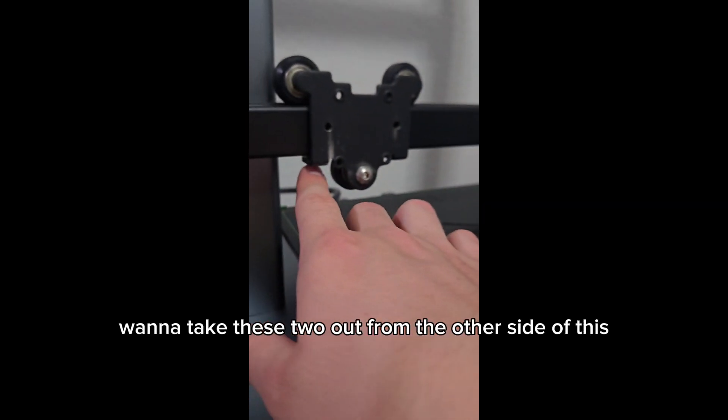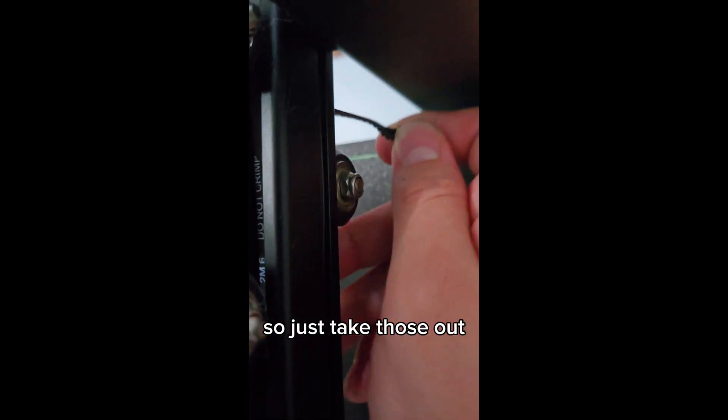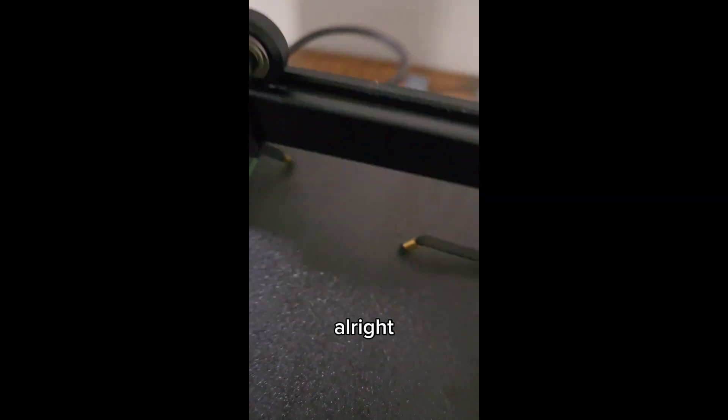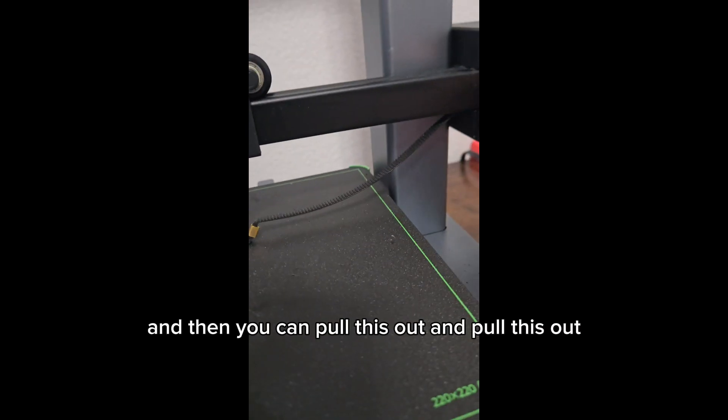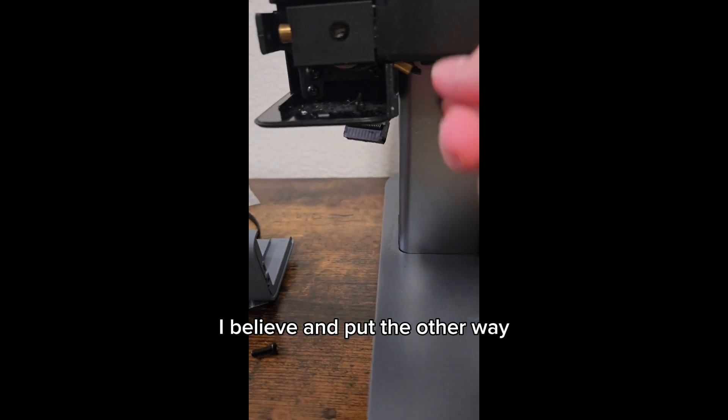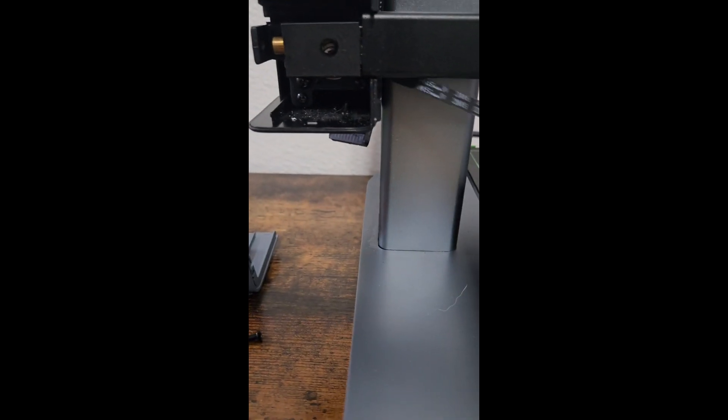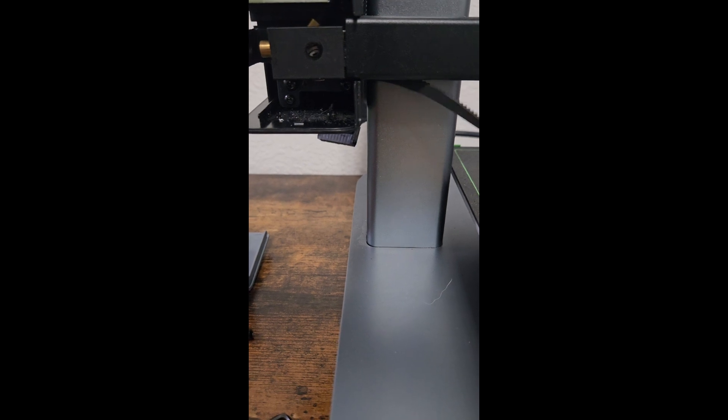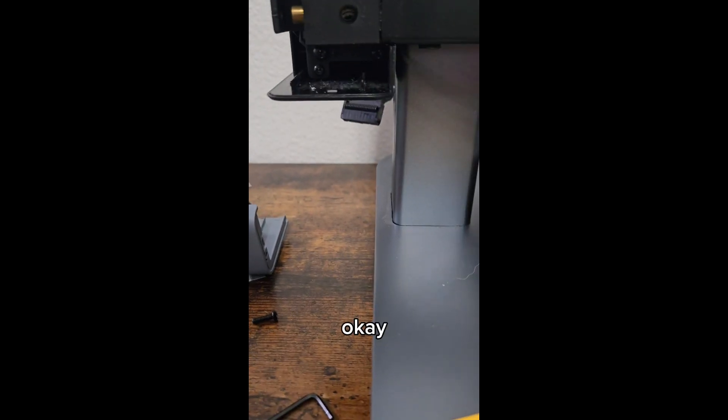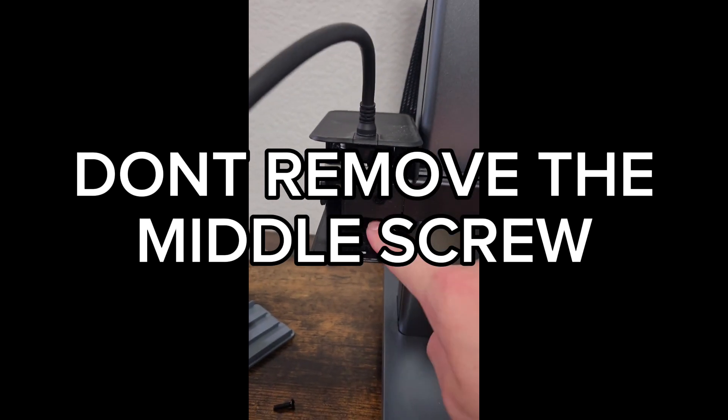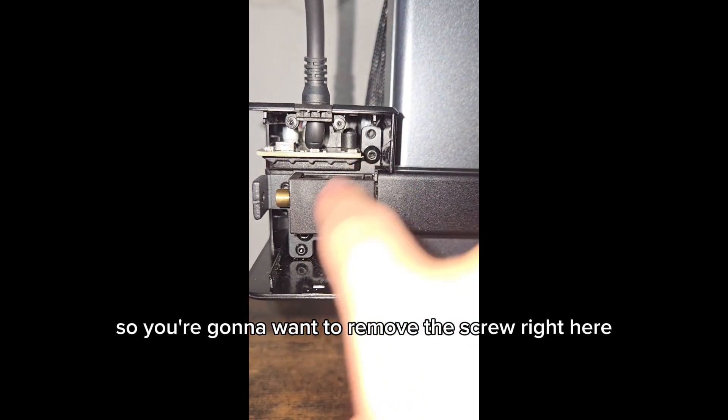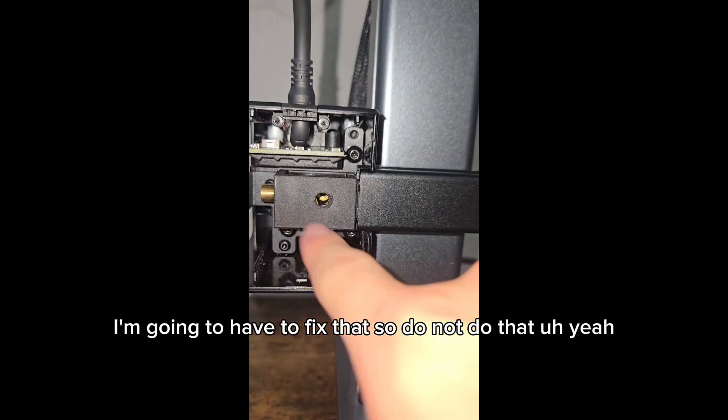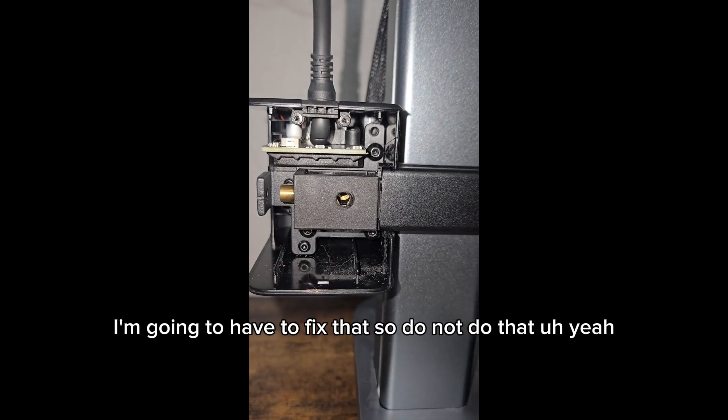So you're going to want to take these two out from the other side of this. So just take those out, like so, get it kind of loose, and bam. And then you can pull this out, and then pull this out, I believe, and pull the other way. Yep. Alright. Okay, so you're going to want to remove the screw right here and right here. Don't remove this one. I'm going to have to fix that, so do not do that.